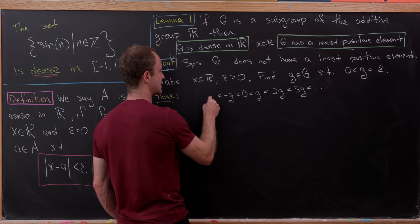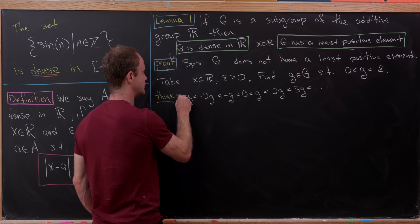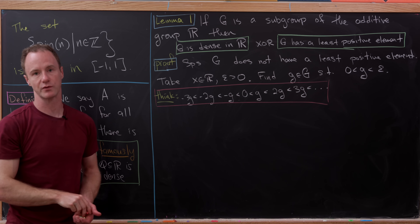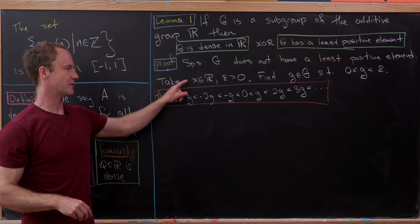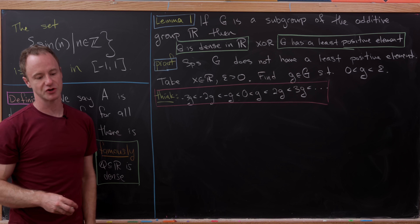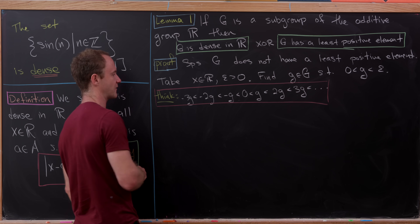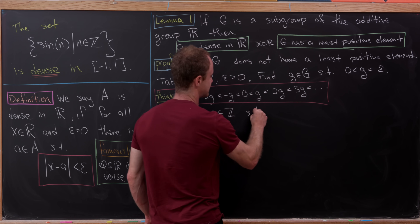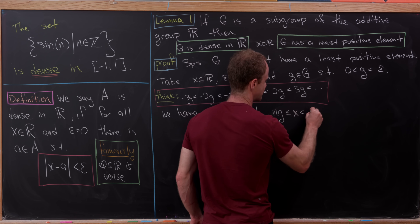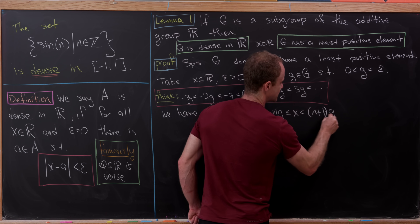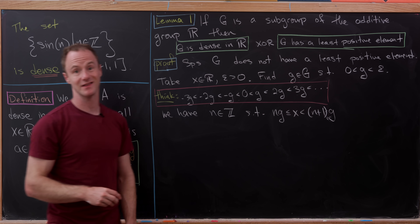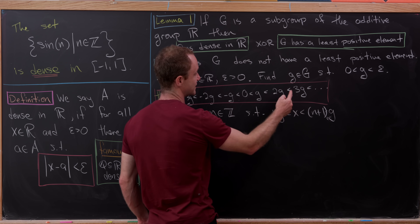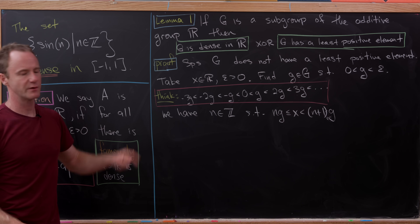Next, think about the string of integer multiples of g: we have zero in the middle, then g, 2g, 3g continuing to the right, and minus g, minus 2g, minus 3g to the left. This string essentially partitions all of the real numbers, so x lies between two of these integer multiples of g. There is an off chance it could equal one of them. So there exists an integer n such that ng ≤ x < (n+1)g.